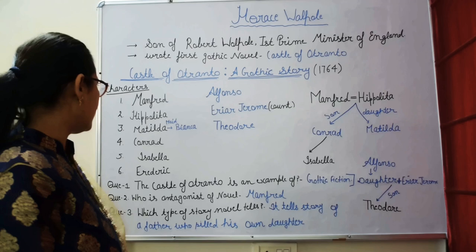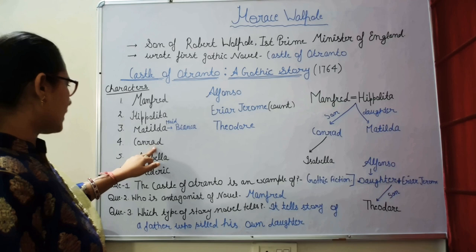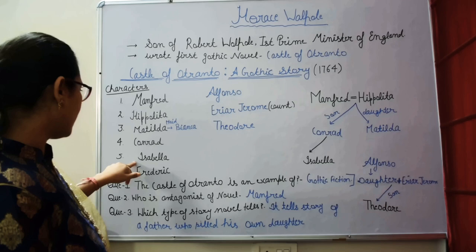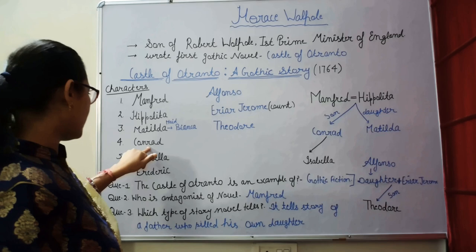The story starts with Conrad's wedding day. Conrad and Isabella are to be married. On the wedding day, a giant supernatural helmet appears — which is the helmet of Alfonso's statue in the castle — and Conrad is crushed to death.